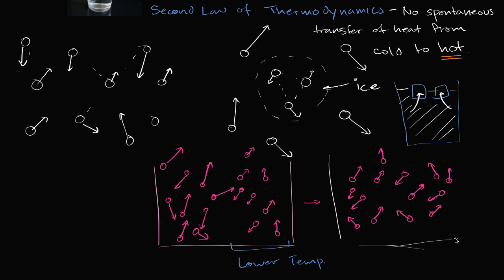So what is the net effect? We had a transfer of energy from the hotter molecules to the colder molecules — that energy is heat, and we use Q to denote it. We have a transfer of energy from hot to cold. It's statistically unlikely, very unlikely, bordering on impossible — there's an infinitesimally small chance it goes the other way, but it just won't be observed. When you're talking about not even millions, but millions of millions of millions of molecules, you're going to see the ones with higher kinetic energy mix in and transfer energy to the ones with lower kinetic energy. That's why we don't see any spontaneous transfer of heat from cold to hot — it is always going from hot to cold.